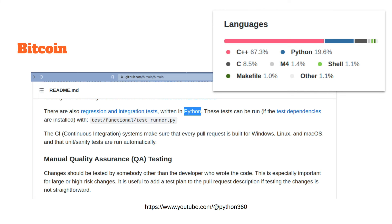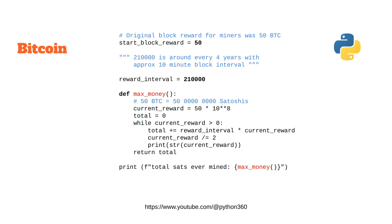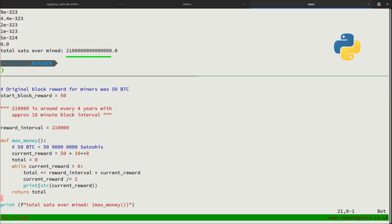You can go on GitHub, look at the tests, and fork them if you want. CI systems make sure that every pull request is built for Windows, Linux, and macOS, and that unit and sanity tests are run automatically. There's also a Python example demonstrating how many Bitcoin will ever be mined — total sats ever mined — and you need to divide that number by 10 to the 8 to get Bitcoin.